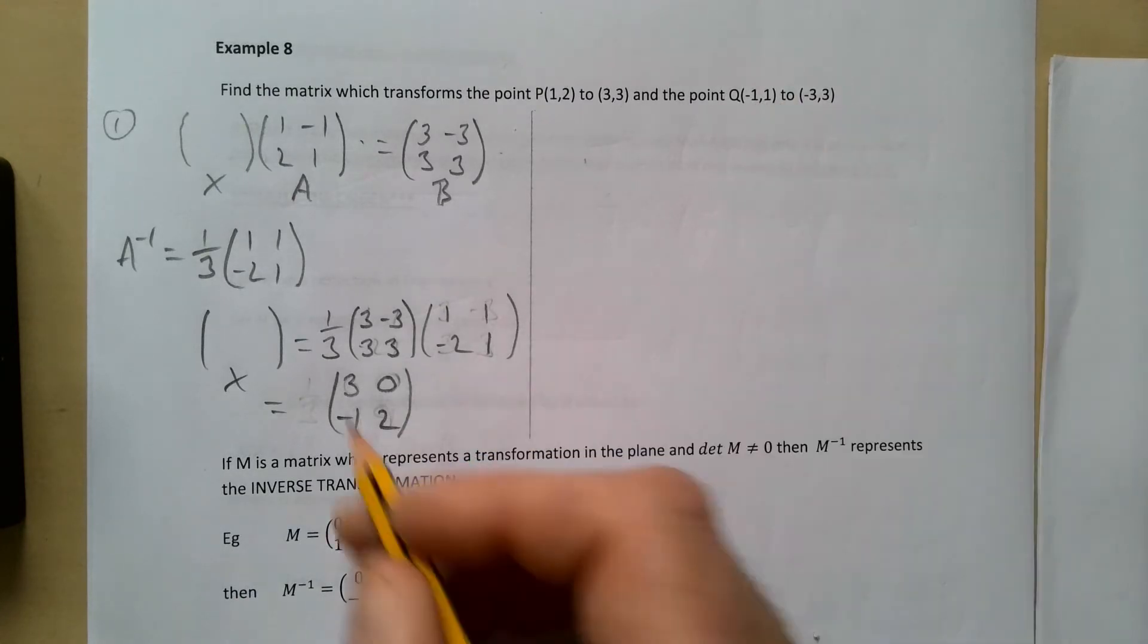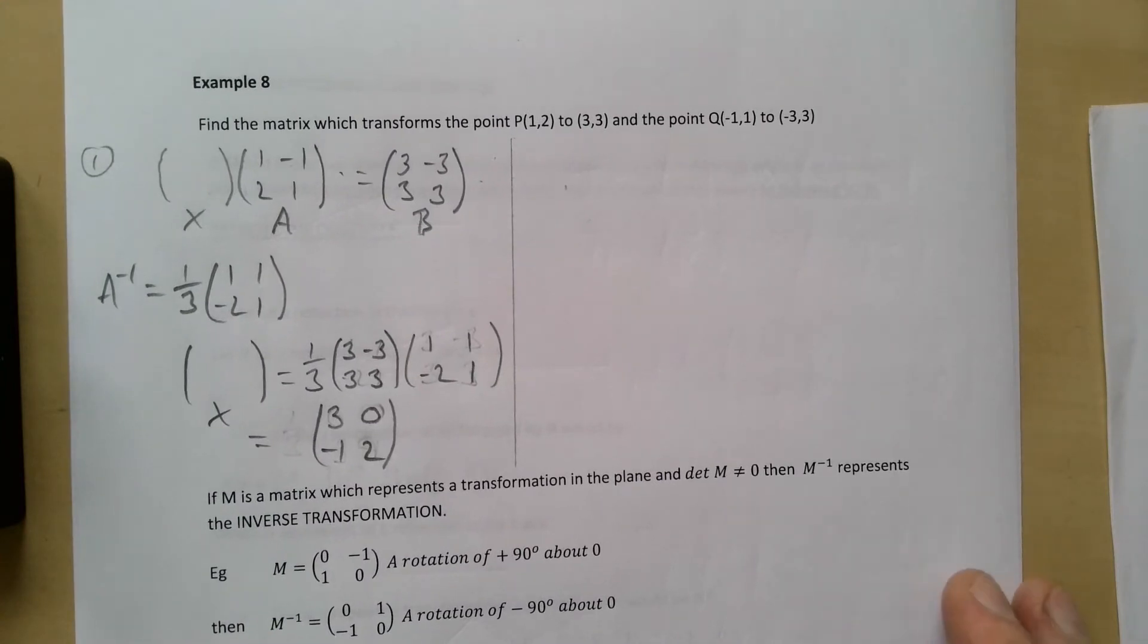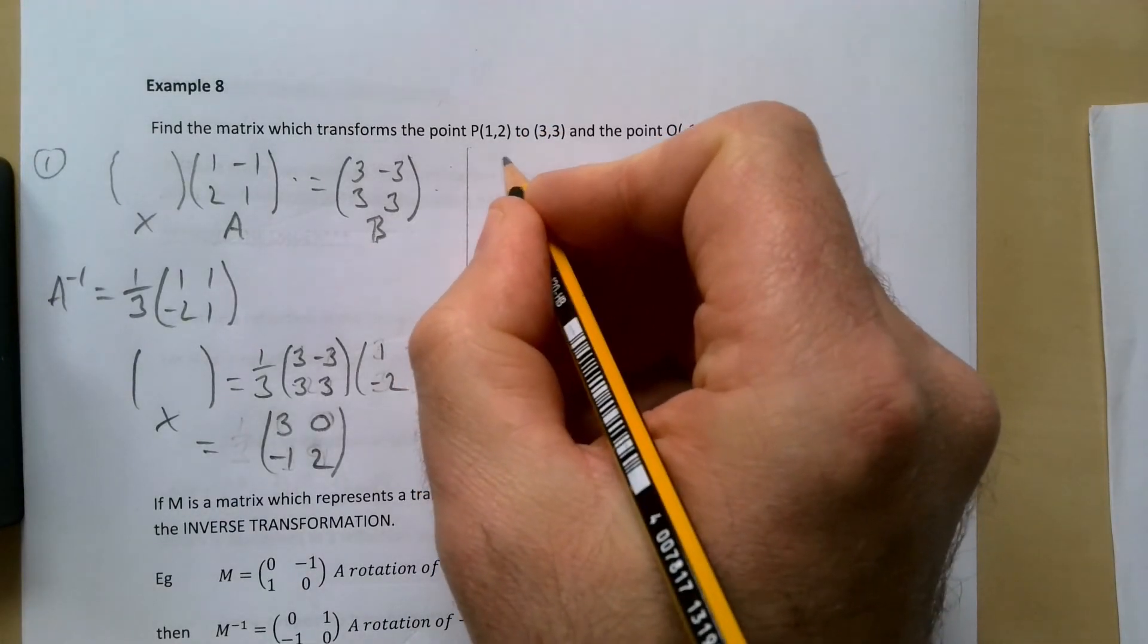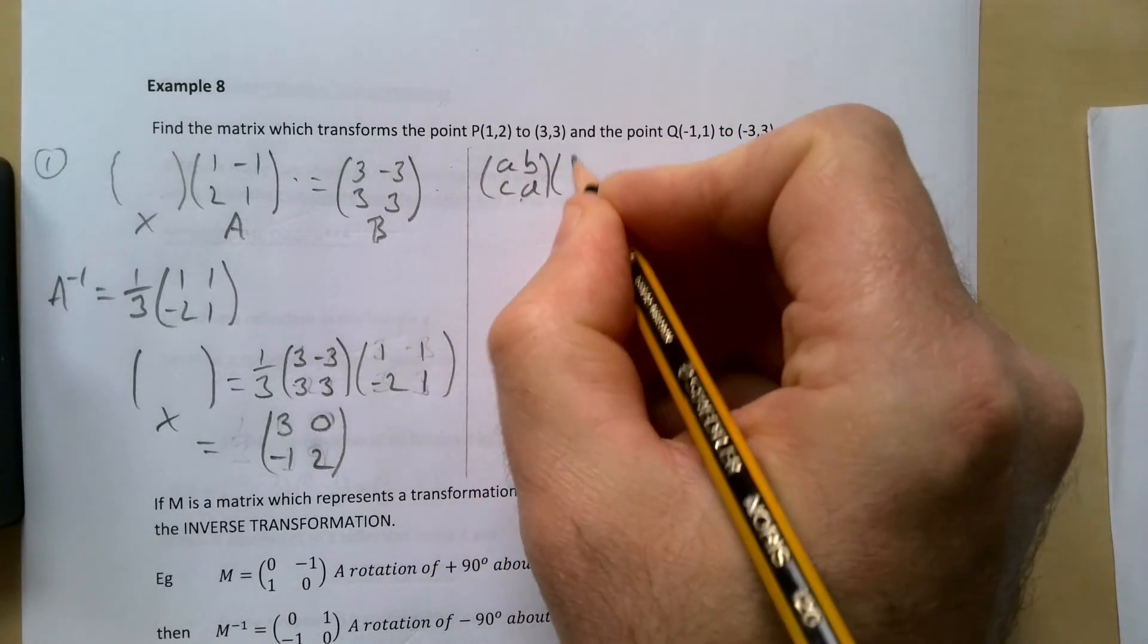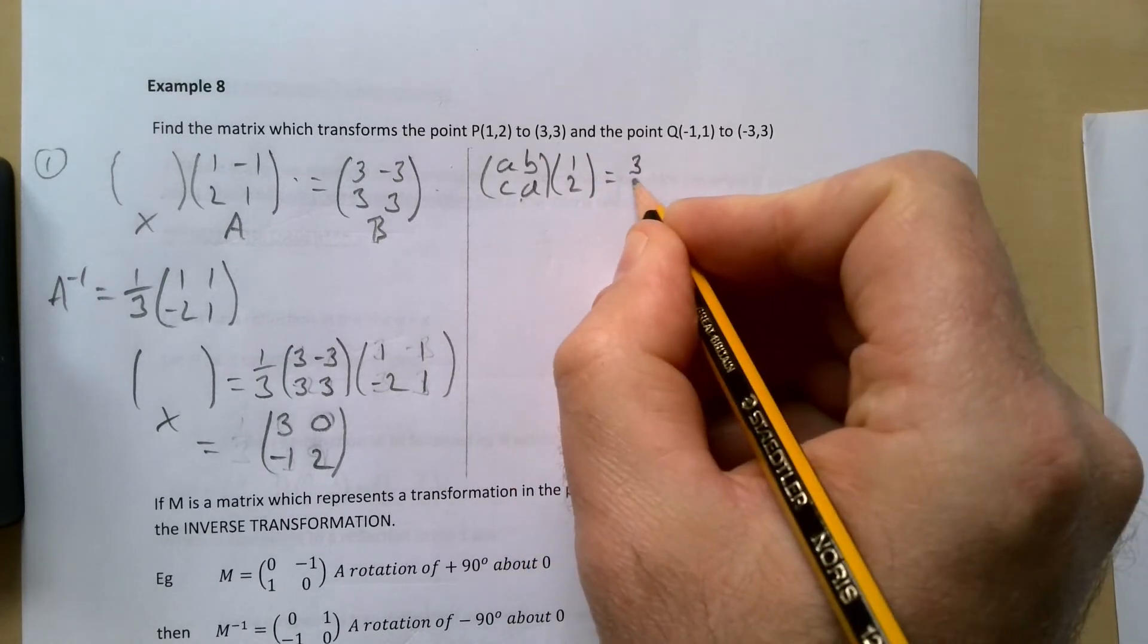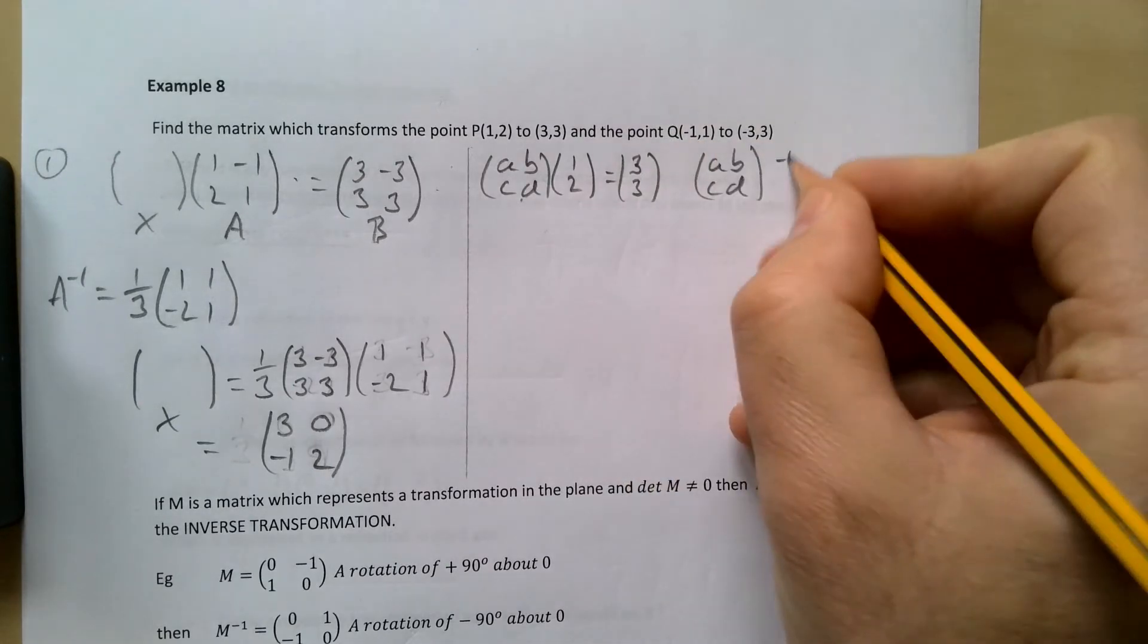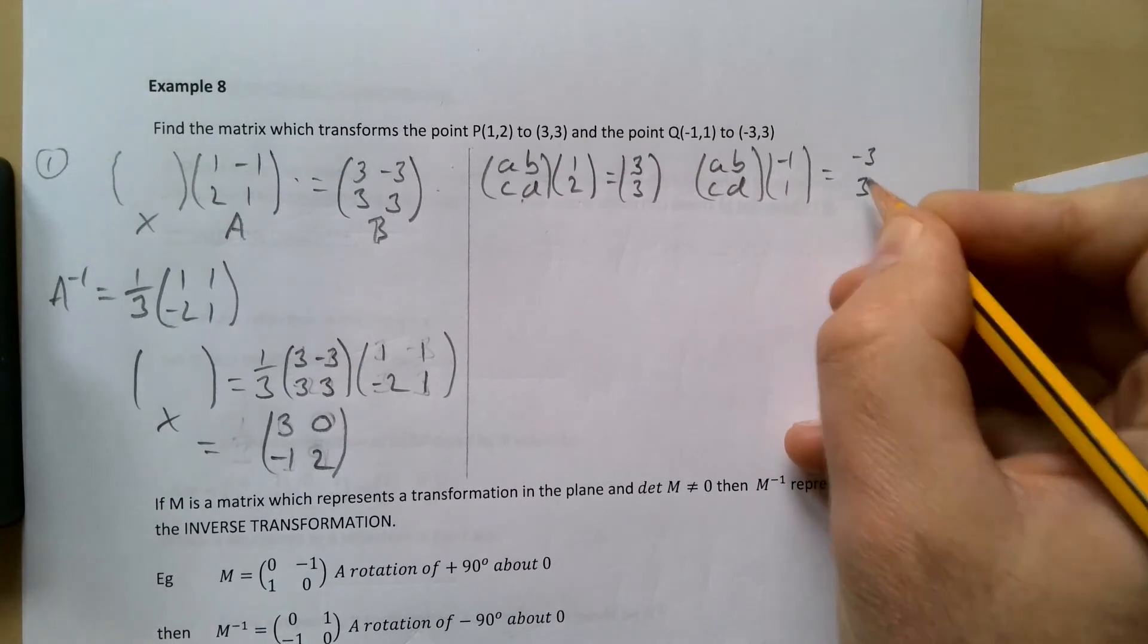The other method is to try and use some sort of form of simultaneous equations. We have some matrix [a b; c d] that changes the point (1,2) to (3,3) and the same matrix [a b; c d] changes the point (-1,1) to (-3,3).